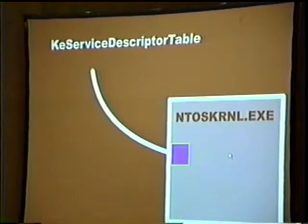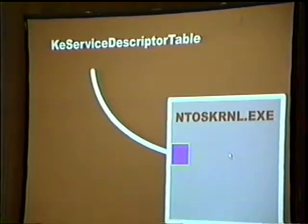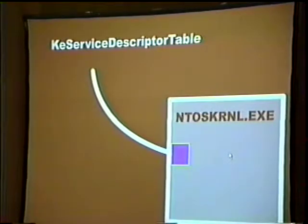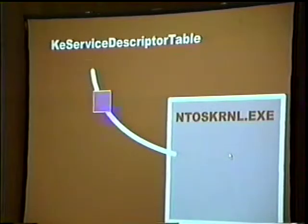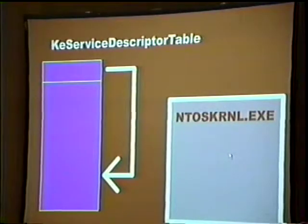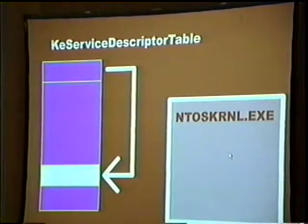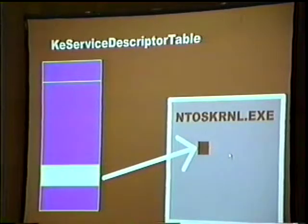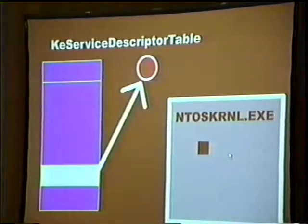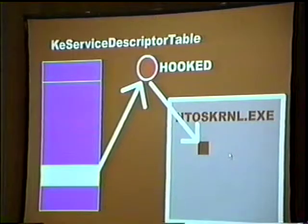ntoskrnl exports the base address of an array of function pointers known as the Service Descriptor Table. Every single system service has an index number — system call 1, system call 2, system call 75 — and the descriptor table is how the call number is converted into an actual function to make the call. The Service Descriptor Table is an array of function pointers; you index to the offset you want and grab the function pointer, which points into the kernel. Our goal is to change that function pointer to point into the rootkit, and then the rootkit in turn points to the kernel — we're now playing man-in-the-middle.